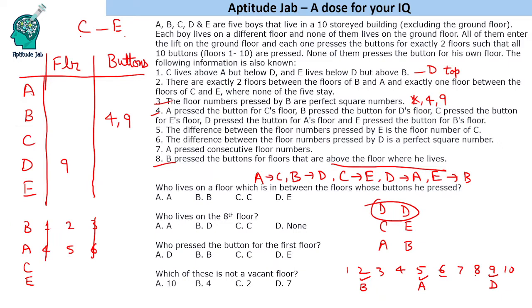With B=2, A=5, and D=9, the remaining floors for C and E must have exactly one floor between them where none of the five stay. Floors 6 and 8 satisfy this condition, with floor 7 vacant between them. So C and E live on floors 6 and 8 interchangeably. D presses button 5 (A's floor), and E presses button 2 (B's floor).